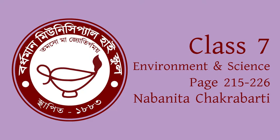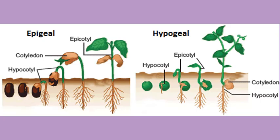Hello students. Today we have started with another physiological phenomenon of living organisms from chapter 6, and that is osmosis. In the previous class you got a clear idea about diffusion, but osmosis is totally different from diffusion because here the role of the semi-permeable — or better said, selectively permeable — membrane is very important.